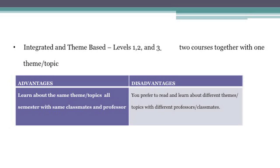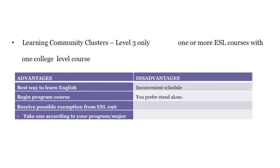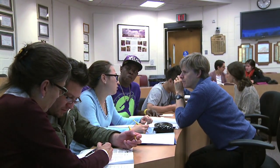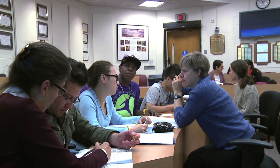Third, we have something called integrated and theme-based. The professors who teach these courses put two courses together, and for the whole semester they teach the same theme and same ideas. You'll see some theme-based courses in history, literature, and so on. These courses you cannot separate — you have to take them together. They have advantages and disadvantages as well. The last kind of course is called the learning community cluster, which is the most confusing to understand, so we'll explain it more when we work with you one-on-one.